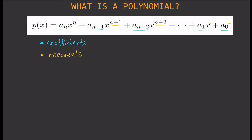Now, how do we know if a certain expression is a polynomial or not? You just have to look at the exponents and the coefficients. In fact, you really have to focus on the exponent of your variable — in this case our variable is x. So what are the things we need to look at to identify whether an expression is a polynomial? Look at the exponent of the variable x.